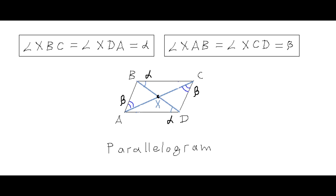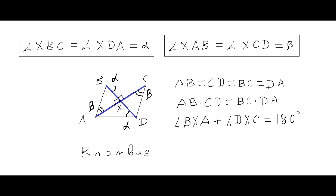If ABCD is a parallelogram, both required conditions — angles XBC equal XDA, and angles XAB equal XCD — force X to be at the intersection of the two diagonals BD and AC. To satisfy AB times CD equals BC times DA, the parallelogram must be a rhombus, where all four sides are equal. In that case the statement is obviously correct, since all four angles around point X are 90 degrees.